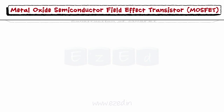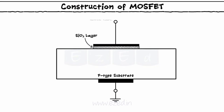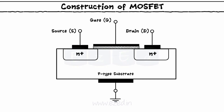Let's see the construction of the MOSFET. To construct an N-channel MOSFET, a P-type semiconductor structure is considered as the base or substrate. Then we dope two N-type wells to obtain the source and the drain terminals, which form the required N-channel between the two. Thus, we get the MOSFET structure as shown.